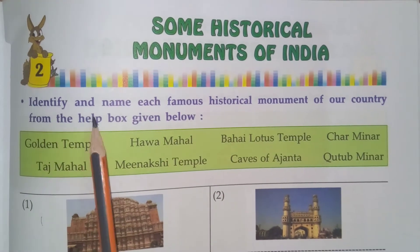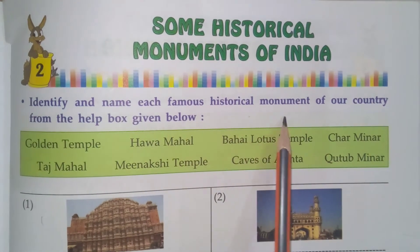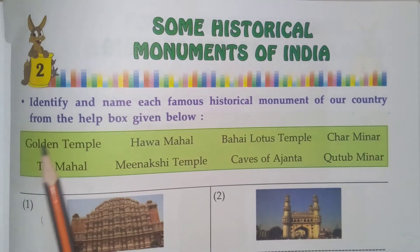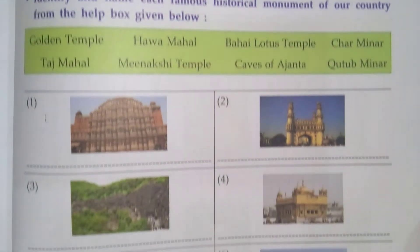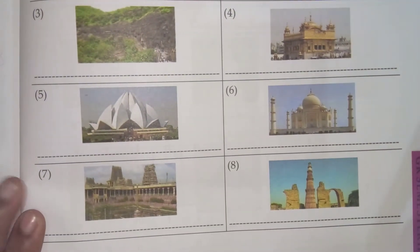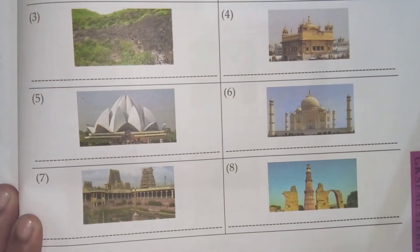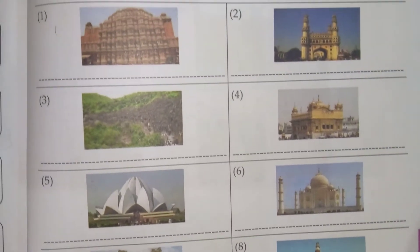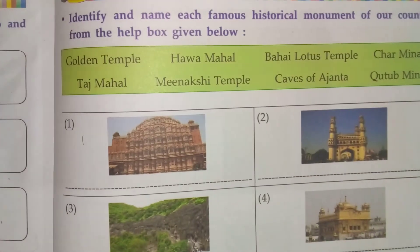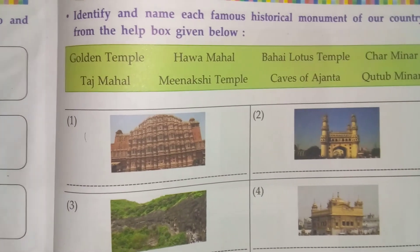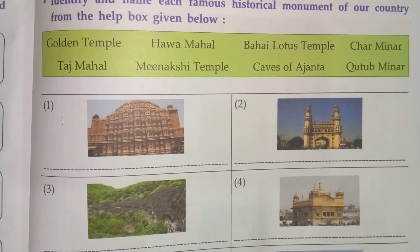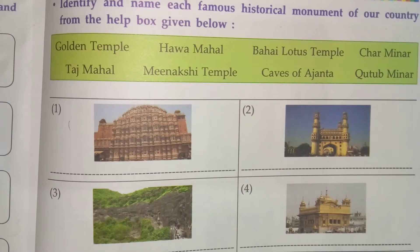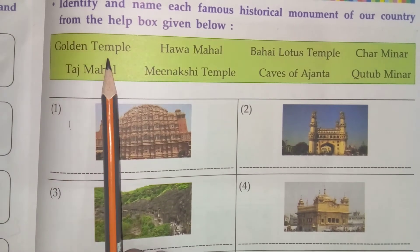See children here, identify and name each famous historical monument of our country from the help box given below. Here they have given some photos, some images. So what we should do? We should find and write the names of those building monuments with the help of this help box.